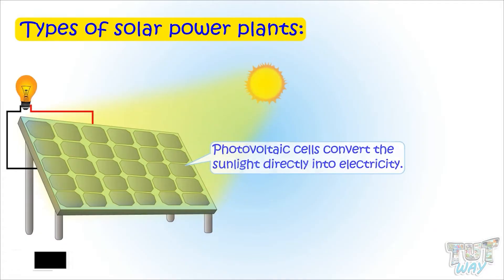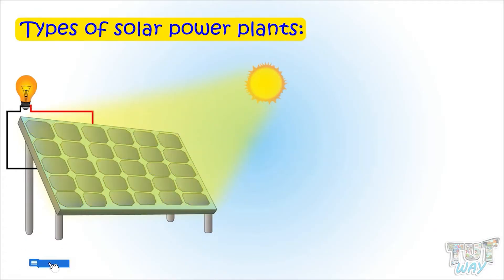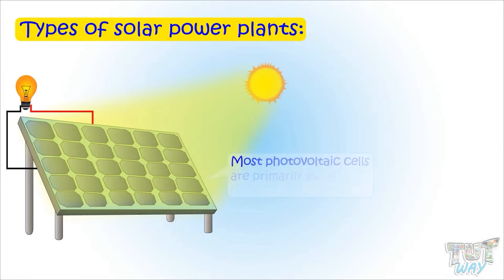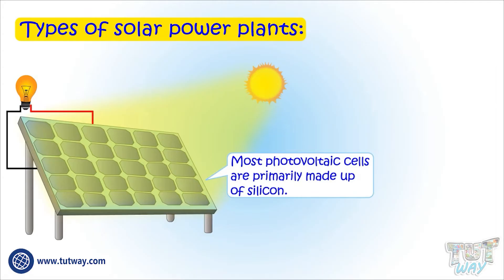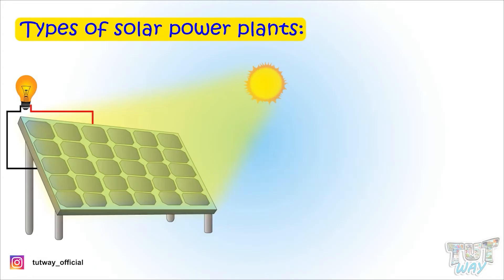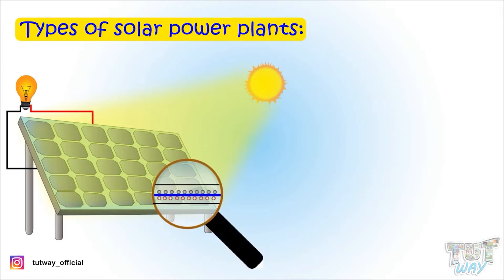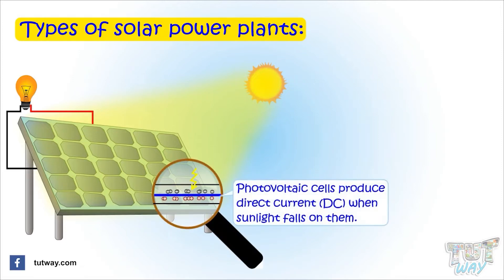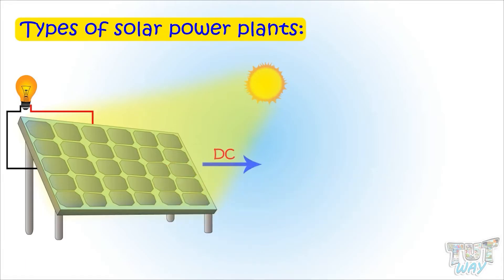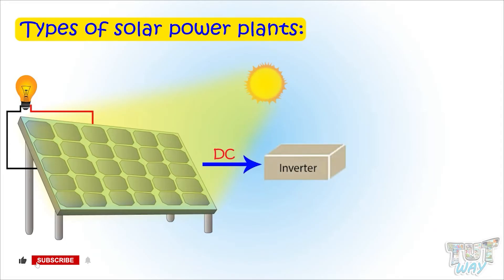These cells are arranged on big rectangular panels. Most photovoltaic cells are made primarily of silicon. When the sunlight falls on these cells, they produce direct current, which is known as DC.